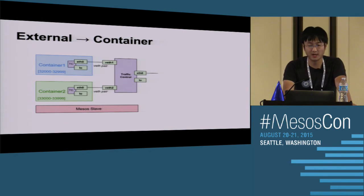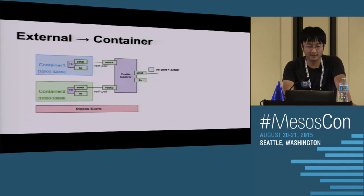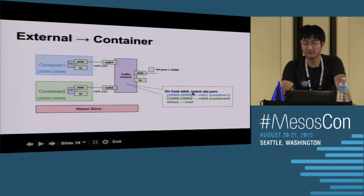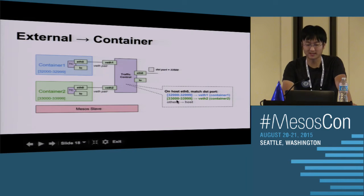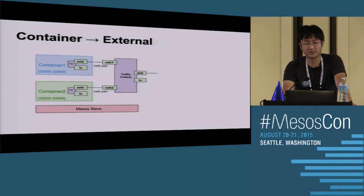For routing a package from external to a container: say a package comes in with destination port 33,500, which belongs to container two. On the host eth0, we have a TC rule saying if the destination port is within a certain range, redirect the package to veth1; if it belongs to another range, redirect to veth2. In this case it belongs to container two, so that package will be redirected to container two.